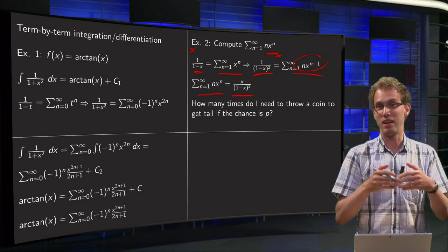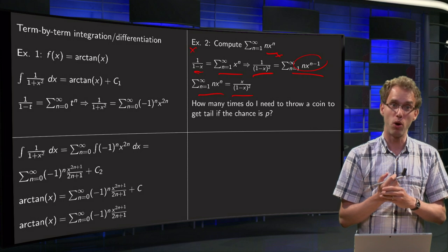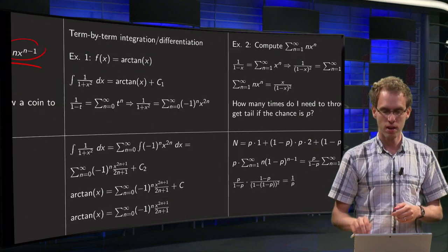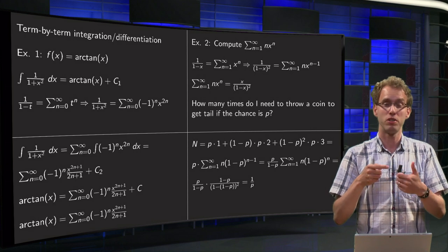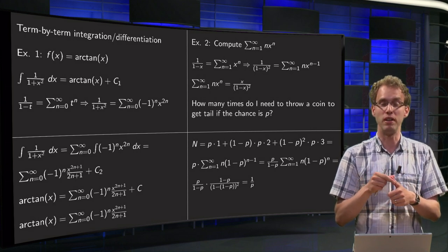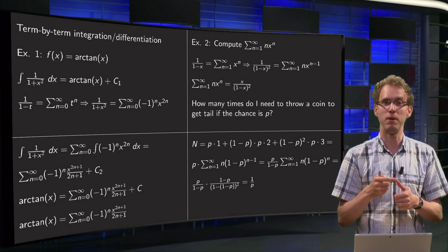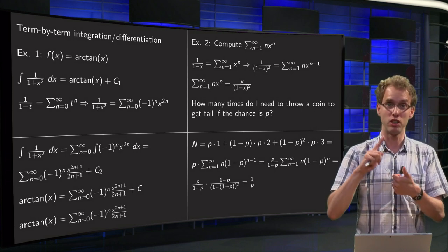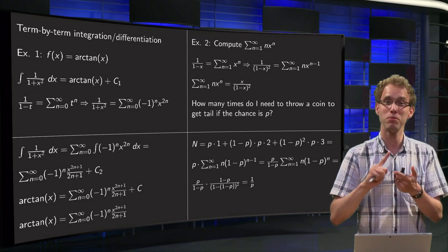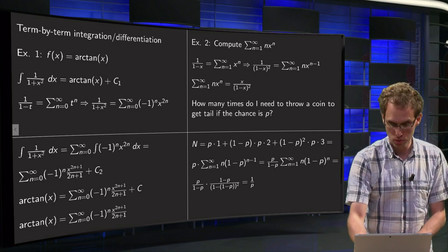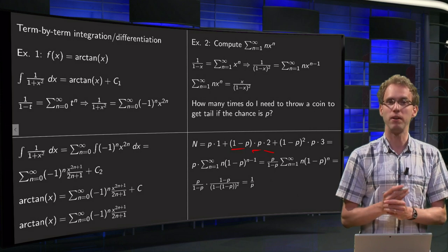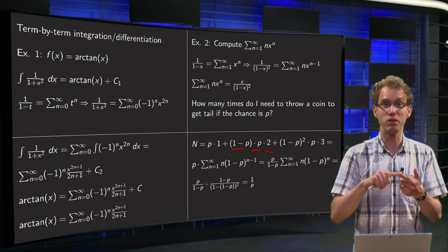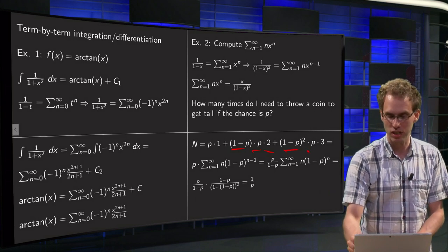Suppose I want to know how many times I need to throw a coin on average to get tails, if the probability to get tails equals p. I can throw one time and my chance of success equals p. What is the chance I have to throw two times? First I have to fail — chance of that equals 1 minus p — then succeed the second time with chance p. So the chance I have to throw two times equals (1 minus p) times p. For three throws: I fail the first two times and succeed the third time, giving (1 minus p) squared times p.